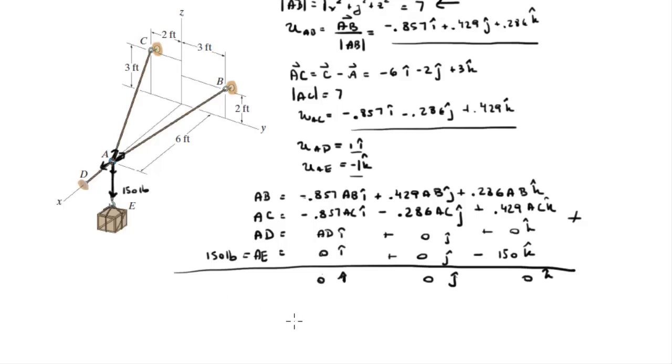So the 3 equations that you're going to use are negative 0.857 a, b minus 0.857 a, c plus a, d is equal to 0, that's our first equation. I'm basically working with this column right here. Minus 0.857 a, b minus 0.857 a, c plus a, d is equal to 0, that's our first equation. Let's call it equation 1.